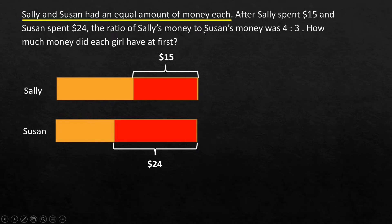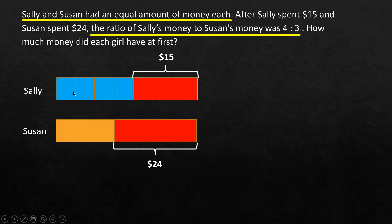The ratio of Sally's money to Susan's money was 4 to 3. When it comes to ratios, if it is in simplest form, we can directly assume 4 units is Sally's remaining money and 3 units is Susan's remaining money. So let's divide Sally's remaining portion equally into 4 units: one, two, three, four.